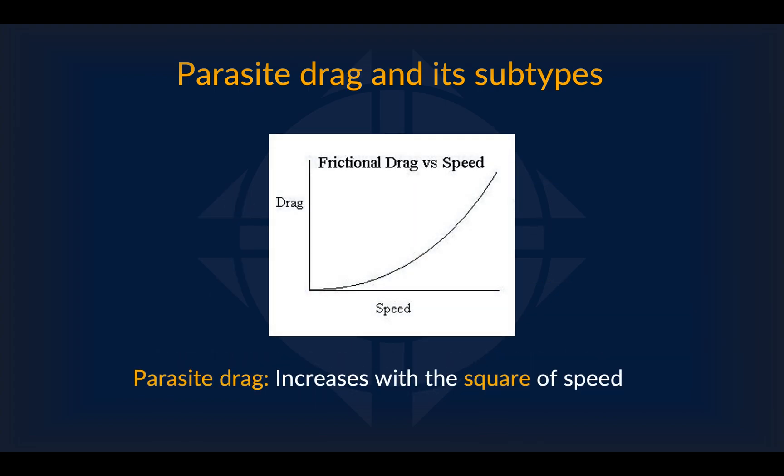What's interesting about parasite drag is that it increases exponentially. Specifically, it increases with the square of speed. That means that if your speed is multiplied by two, your parasite drag is increased by four times. This is very important to know for aerodynamics, as thrust is also connected to lift. Not accounting for parasite drag and its effects can easily cause an airplane to crash.